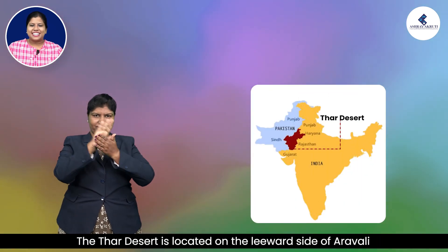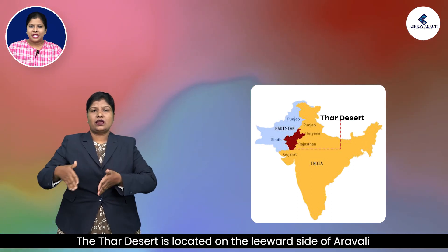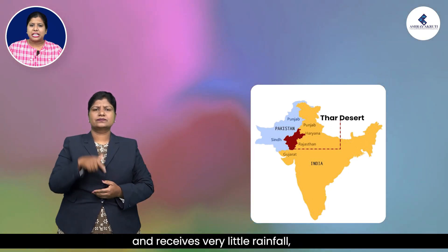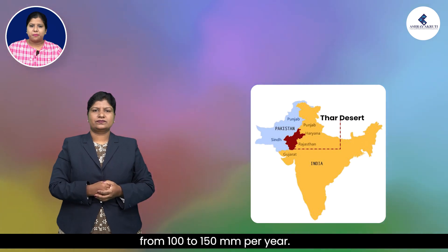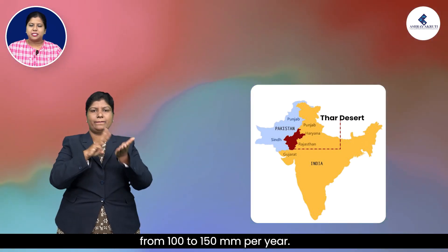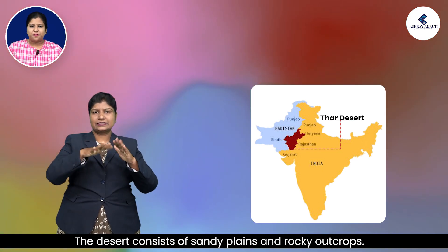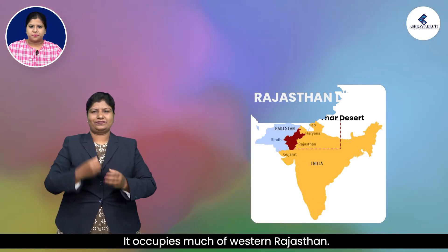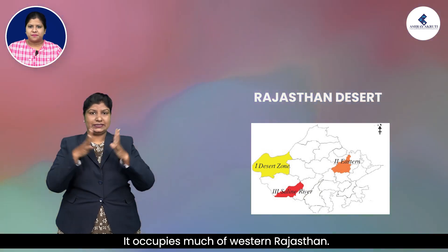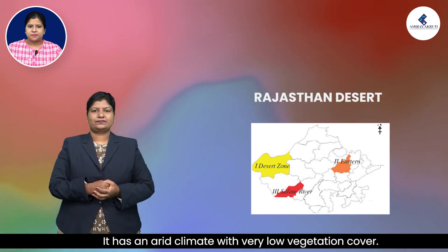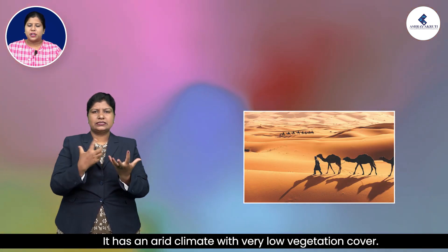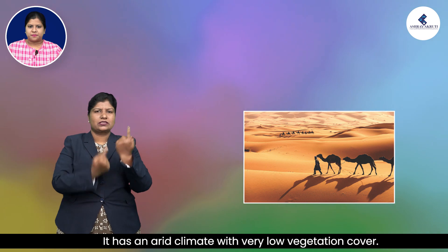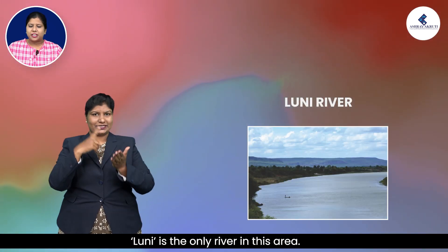The Thar Desert is located on the leeward side of the Aravalli range and receives very little rainfall, ranging from 100 to 150 millimeters per year. The desert consists of sandy plains and rocky outcrops and occupies much of western Rajasthan. It is an arid climate with very low vegetation cover. Luni is the only river in this area.